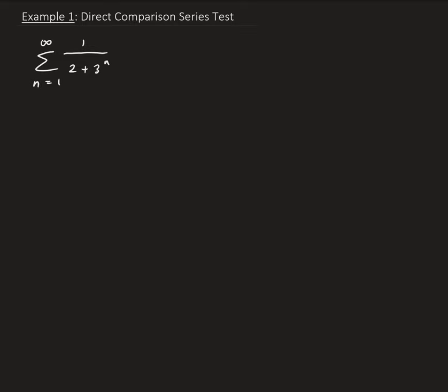So looking at our series, we have 1 over 2 plus 3 to the n. So basically we have just 1 on top, and then on the bottom we have a 2 and a 3 to the n. So 3 to the n is going to be more significant than the constant. So we can use this part, we can use this as a way to for our series to resemble this one.